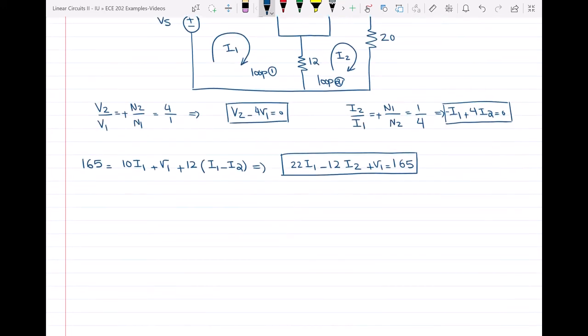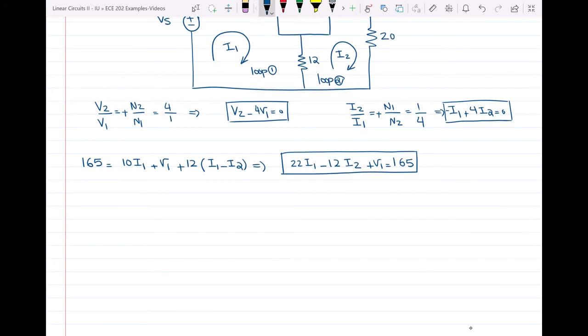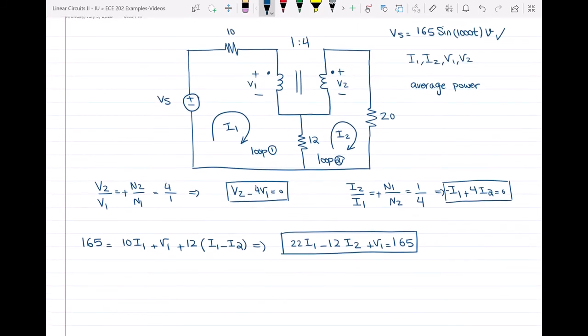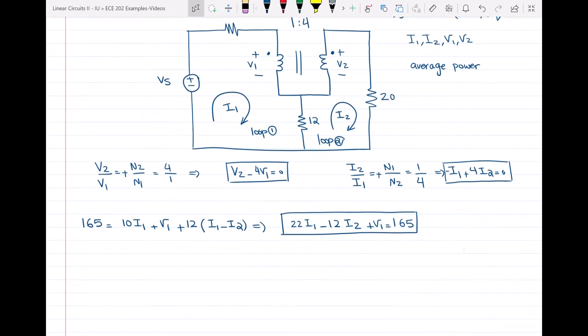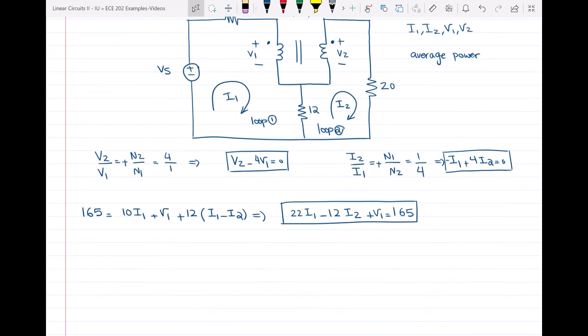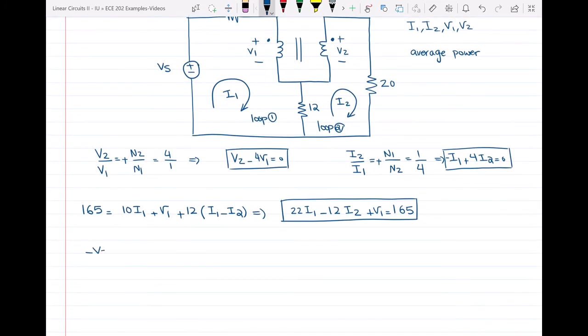Then my fourth equation will be the KVL at loop two. At loop two, you see that we have minus V2 plus 20I2 plus 12(I2 minus I1) is equal to zero. So here I'm going to have 22I2 minus 12I1 minus V2 is equal to zero.